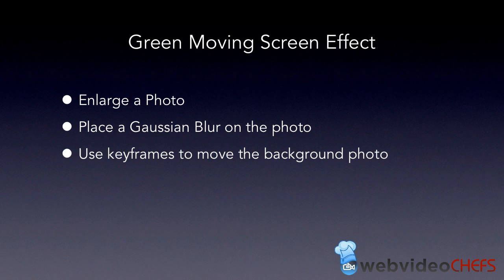To do it, we're going to do three things: we'll have a photo in the background, we're going to place a Gaussian blur on the photo, and then we're going to use keyframes to move the background photo. I'm going to use Final Cut Pro X, but you can easily do this in Adobe Premiere, Avid, After Effects, Final Cut Pro 7, or Sony Vegas. I'm just going to show you the principles and you can apply this to your specific editing program.